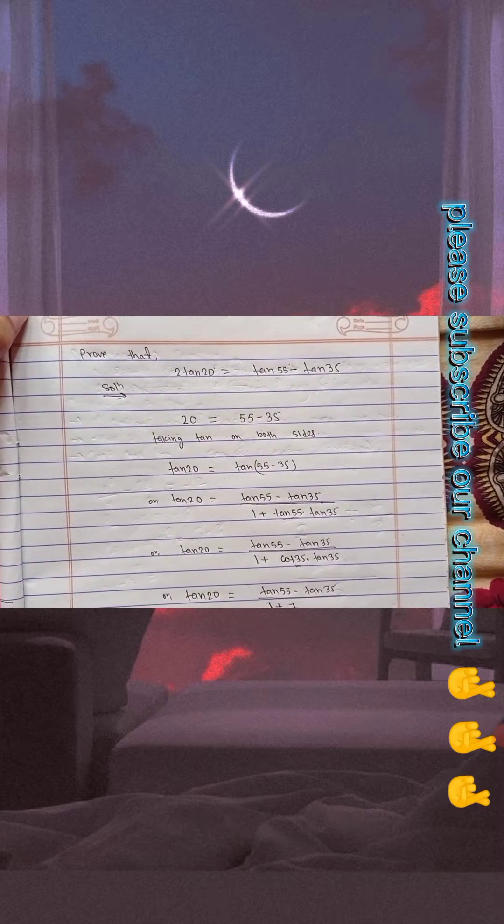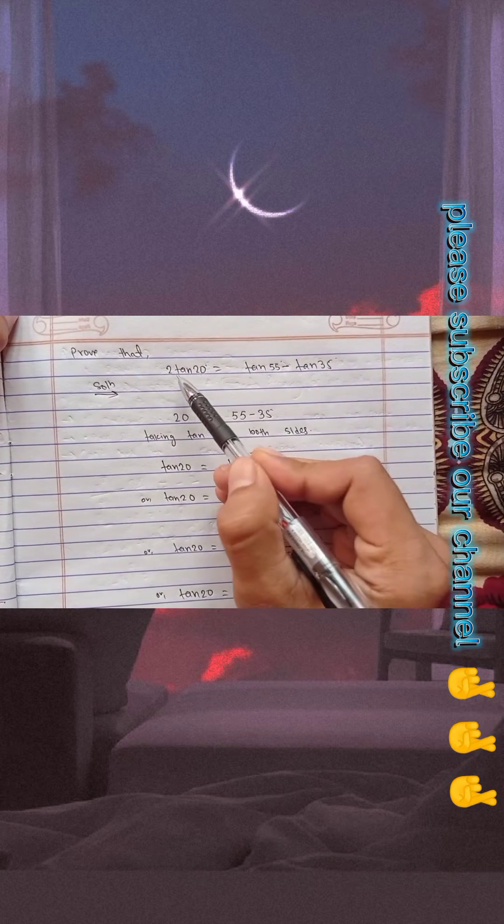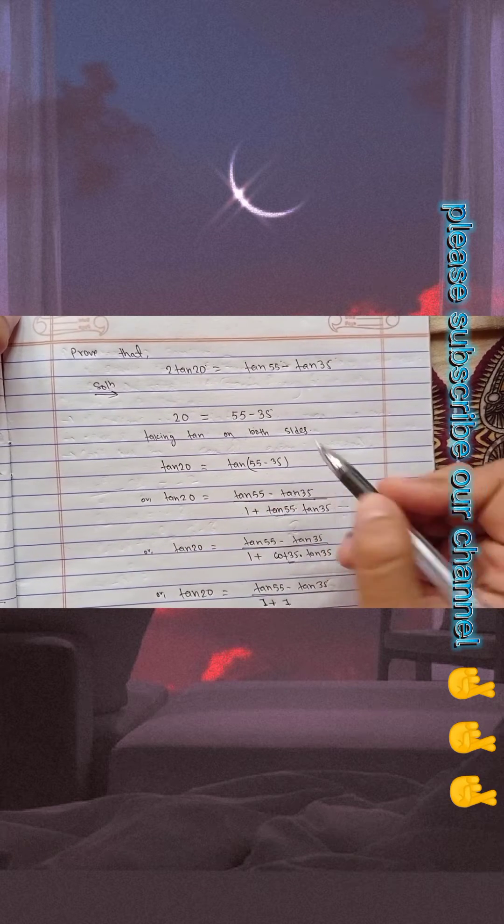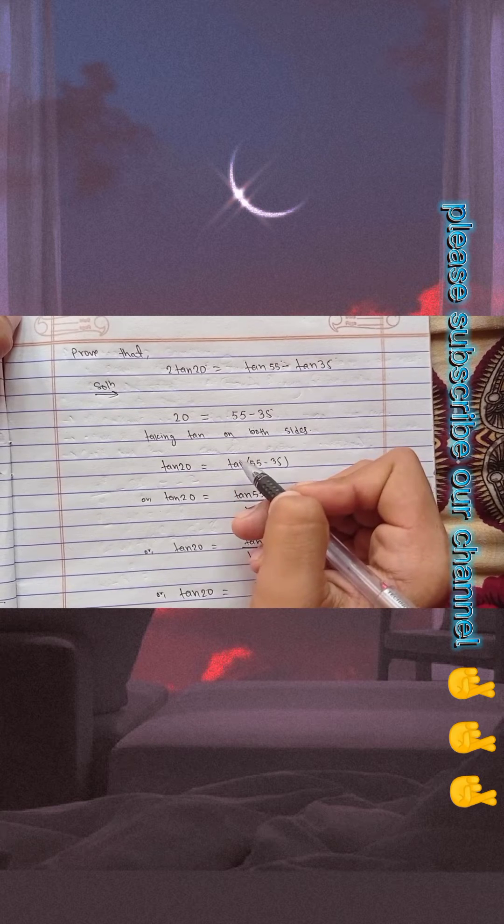Hello there, today I have one question from trigonometry to prove: 2tan20° equals tan55° minus tan35°. For this, we take 20 equals 55 minus 35, and...